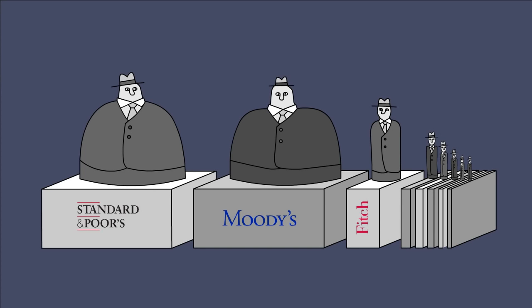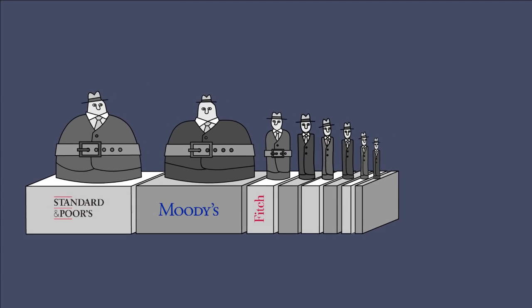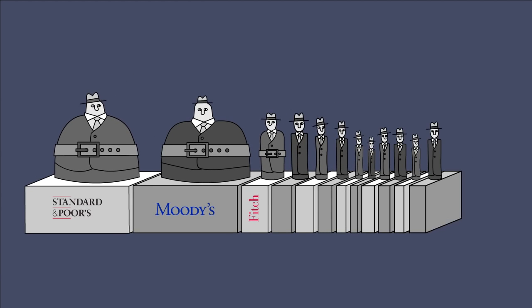The power of the three major agencies should be restricted, including a ban on expansion. There should be an increased number of alternative agencies, including a public or at least a non-profit agency.